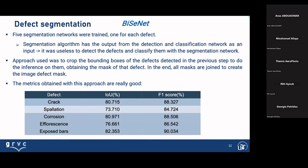We used five networks, training one for each kind of defect: crack, spallation, corrosion, efflorescence, and exposed bar. The segmentation algorithm takes as input the output from the detection and classification network. The approach uses the bounding box of the defect detected in the previous step to perform inference, obtaining the mask of that defect. All masks are then joined to create the image defect mask. The metrics obtained are already good — always above 80-90% — and we also use the F1 score, which measures the balance between precision and recall. We reached near 90%.